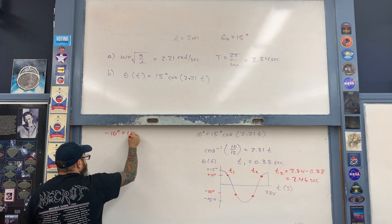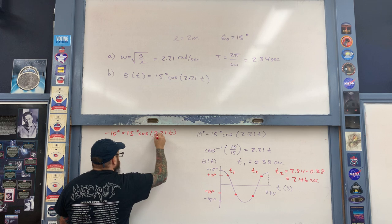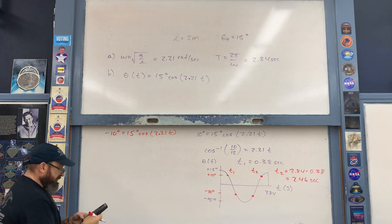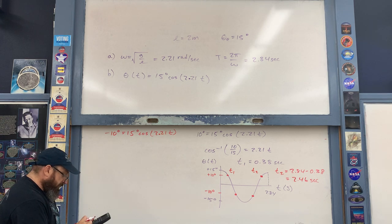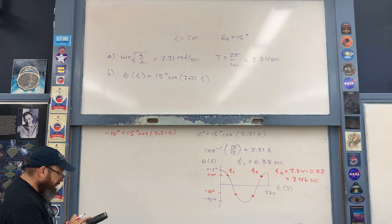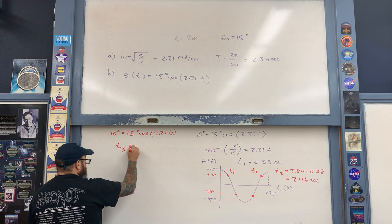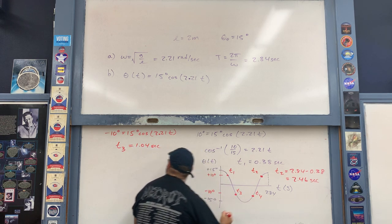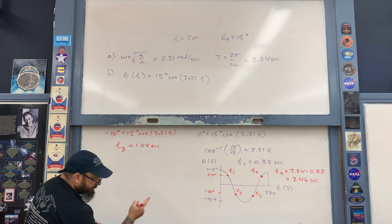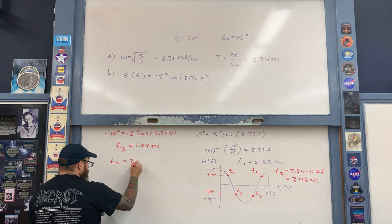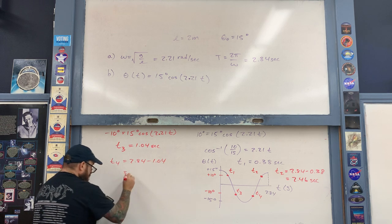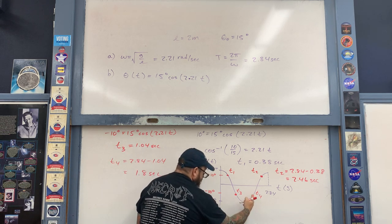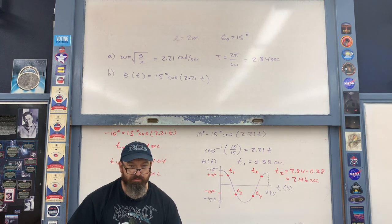For the fourth time at −10 degrees: t₄ = 2.84 − 1.04 = 1.80 seconds. So the four times in one period when the pendulum is at ±10 degrees are t₁ ≈ 0.38 s, t₃ ≈ 1.04 s, t₄ ≈ 1.80 s, and t₂ ≈ 2.46 s. The kinematics of a simple pendulum is straightforward once the differential equation is established.